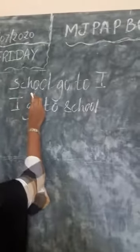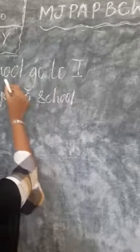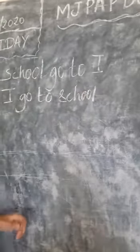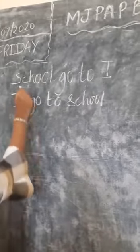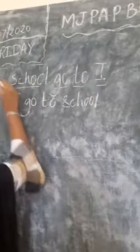So if you look here, here it says school go to I, school go to I. These are all words, right? School is a word, go is a word, to is a word, I is a word. But this does not make any sense.